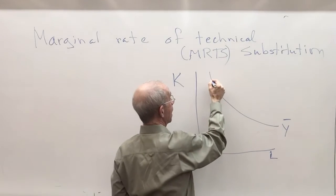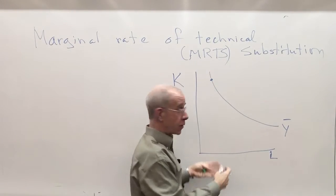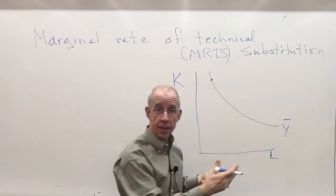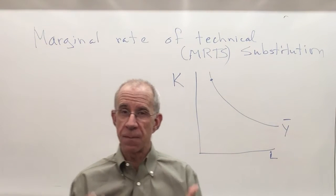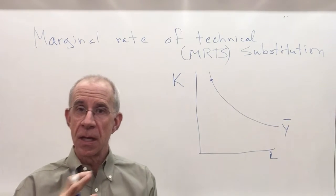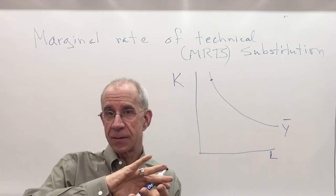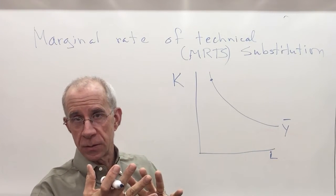You can either use a lot of capital, a little bit of labor, or you can use a little capital and a lot of labor, various choices. So the marginal rate of technical substitution is really trying to get a sense of the trade-off between these two.